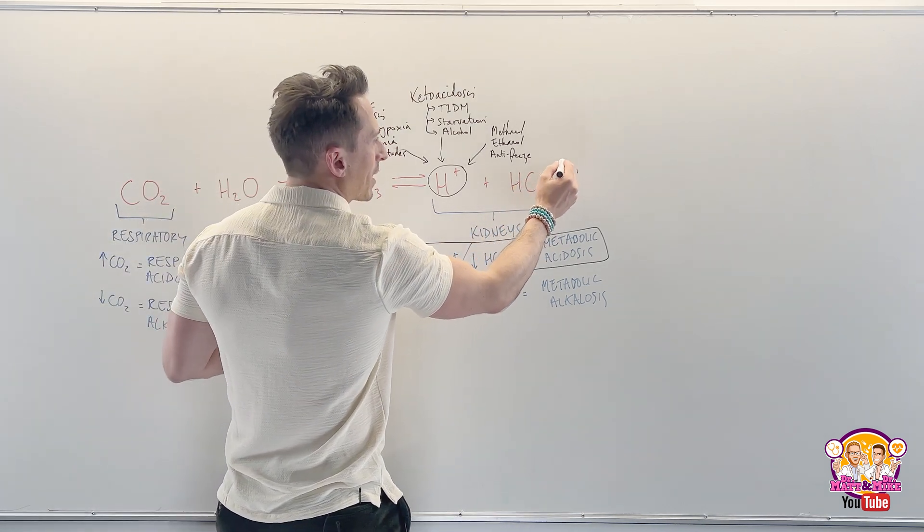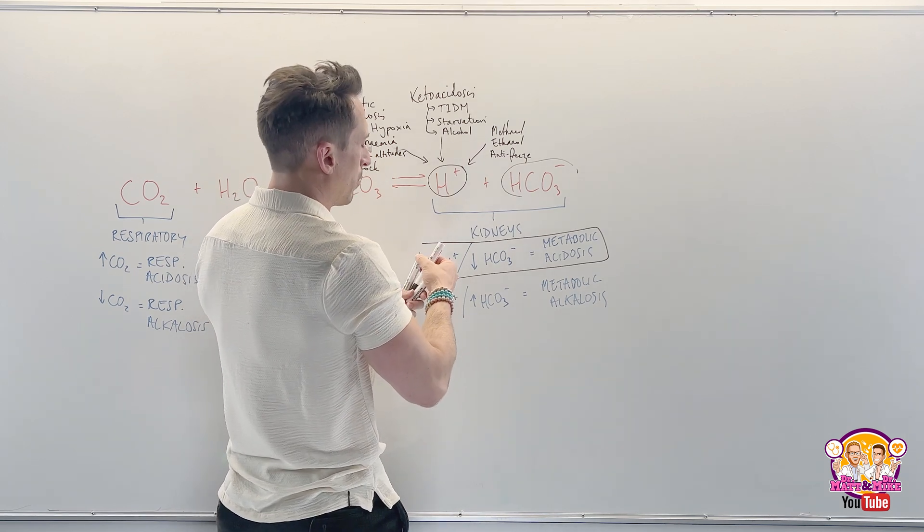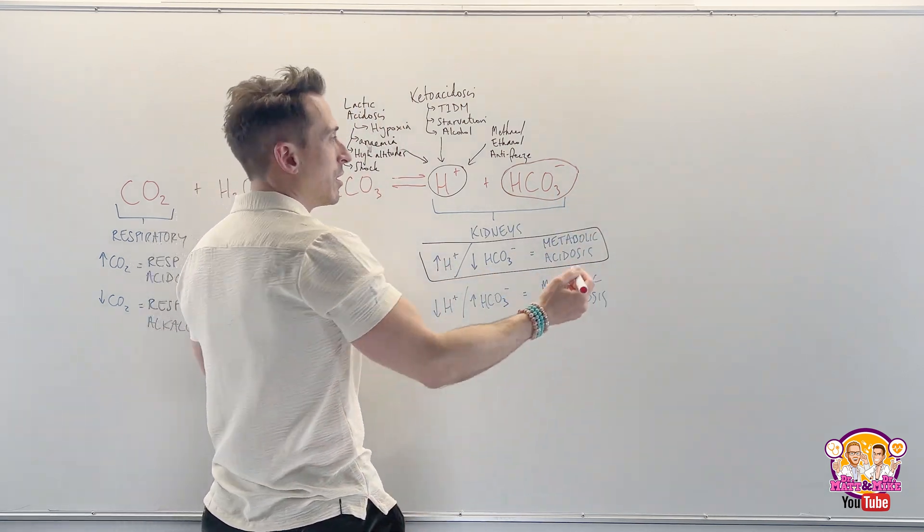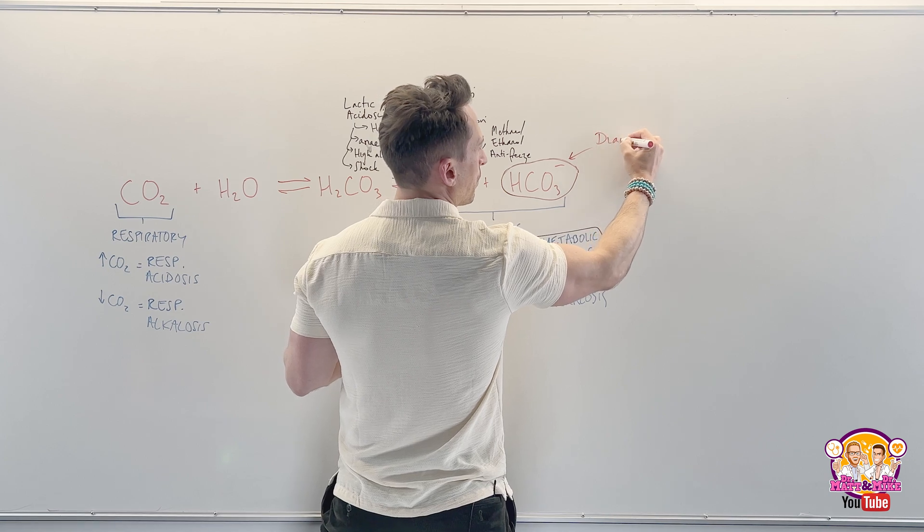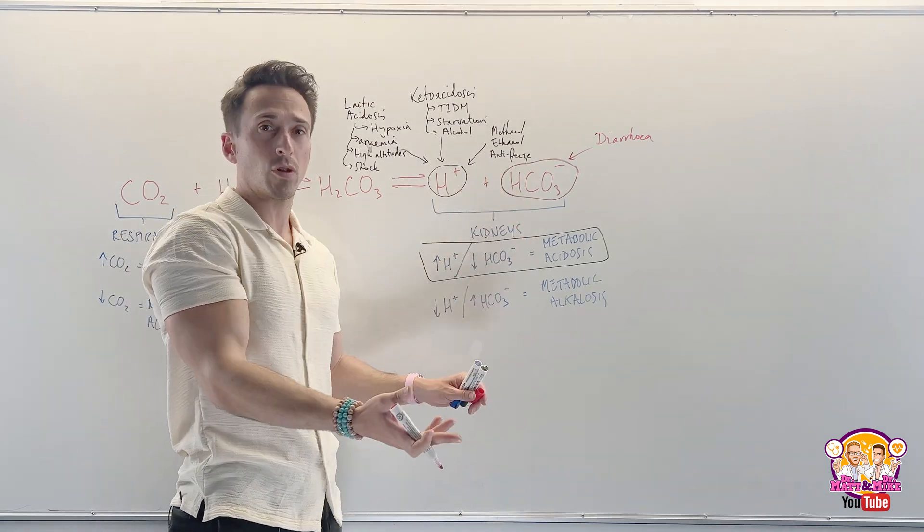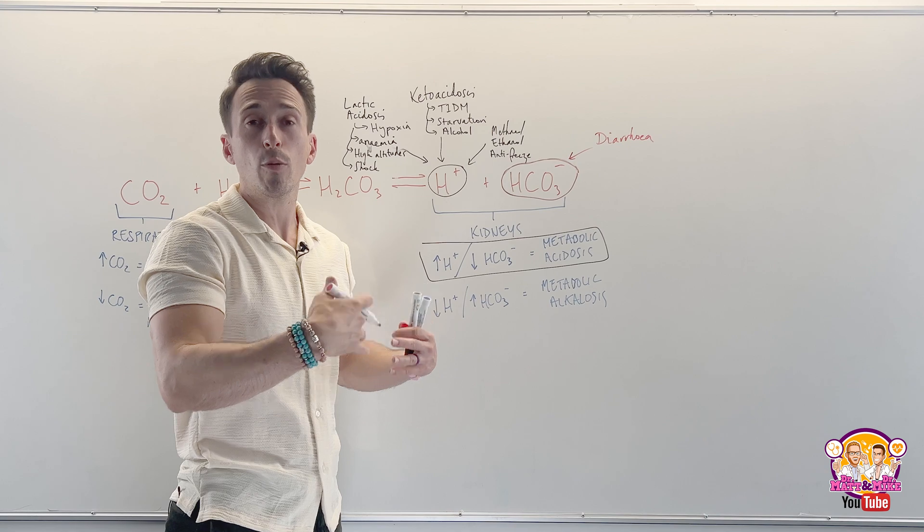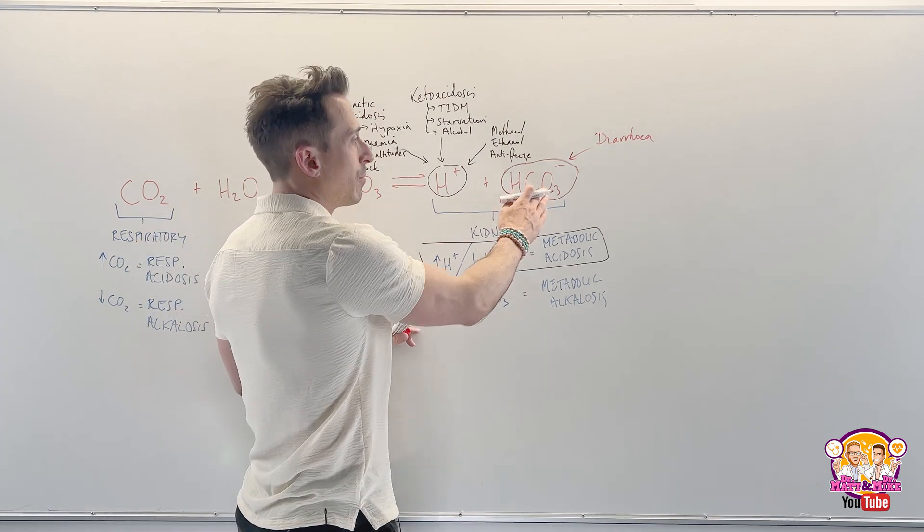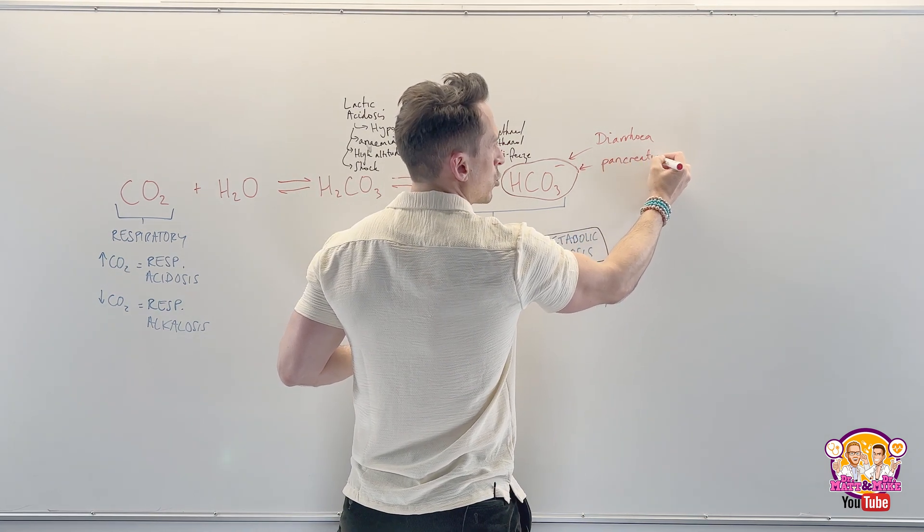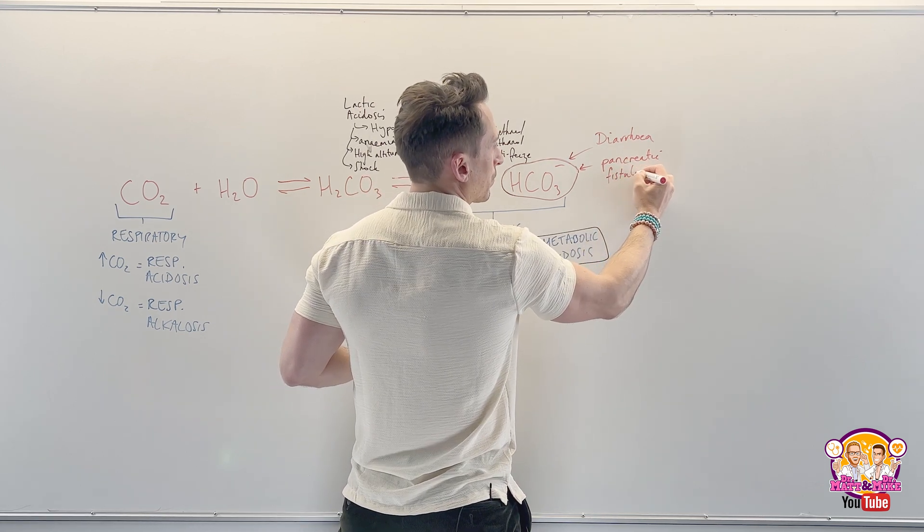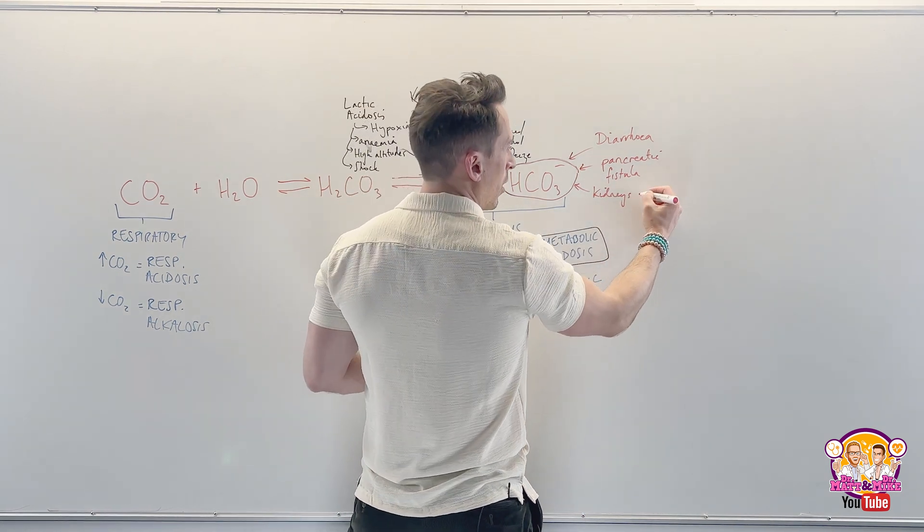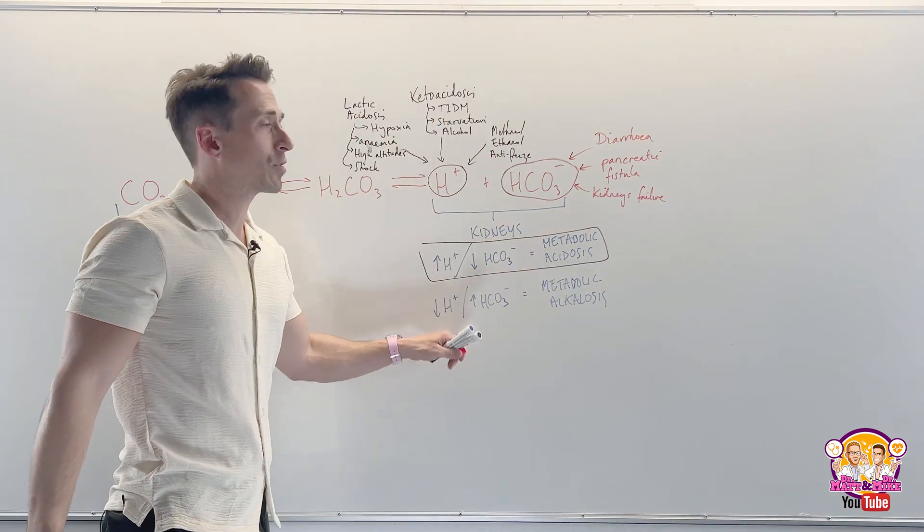That's one way you could produce a metabolic acidosis by increasing the hydrogen ions. Or we can reduce the bicarbonate. How do we reduce the bicarbonate? We need to excrete it too much. How do we excrete too much bicarbonate? Diarrhea. Remember that the pancreas produces bicarbonate to neutralize the acid in the stomach. But we should reabsorb all that bicarbonate. If you've got diarrhea, you're pooping it all out. Maybe you've got a pancreatic fistula, which means the pancreas is not connected to where it should be and it just leaves the body. Maybe you've got a problem with the kidneys itself and you're just peeing out the bicarbonate. So kidney failure.